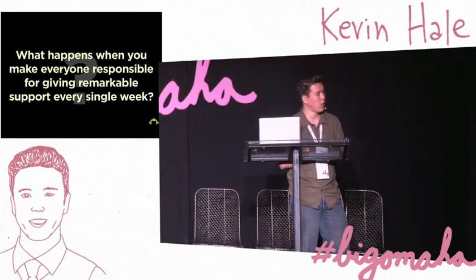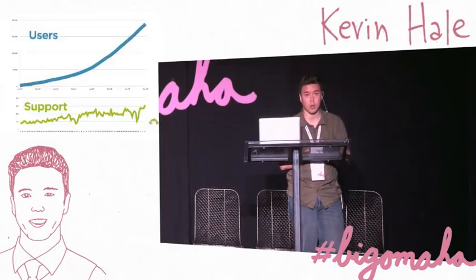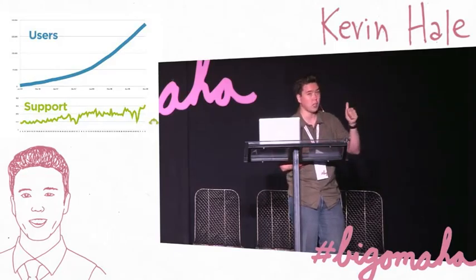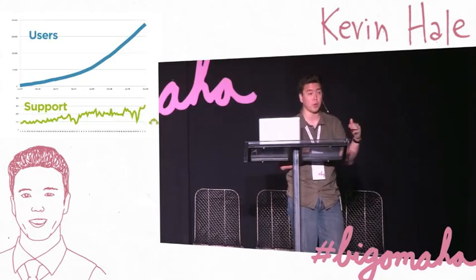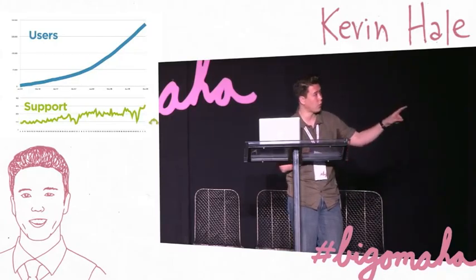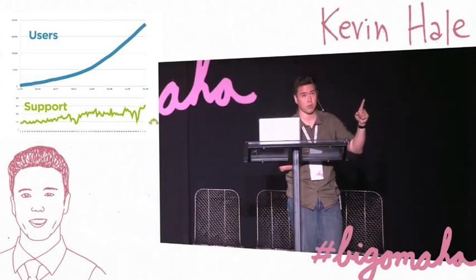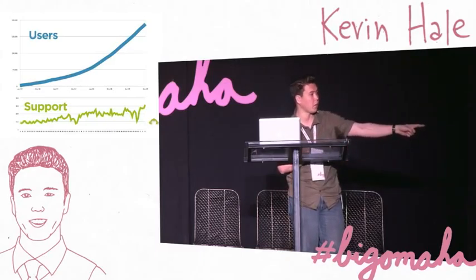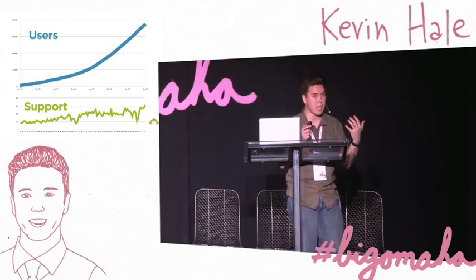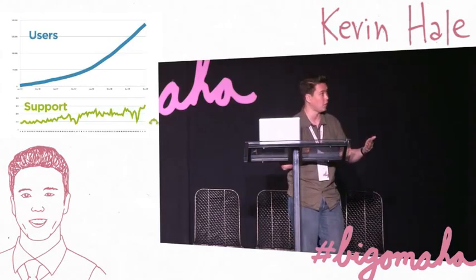On a more interesting business metric: this is what happens when everyone does customer support every week. This is our user growth curve for the first four years of Wufoo. We spent no money on traditional advertising and marketing — it was all word-of-mouth growth. Most of it came through people interacting with the customer support and thinking 'wow, that was really fantastic and really fast.' For us, what was more difficult than scaling the technical system was that remarkable customer support required one-on-one interactions, and scaling that was our biggest challenge. We spent most of our time scaling down the amount of support coming in, keeping it on a very interesting linear curve rather than exponential.